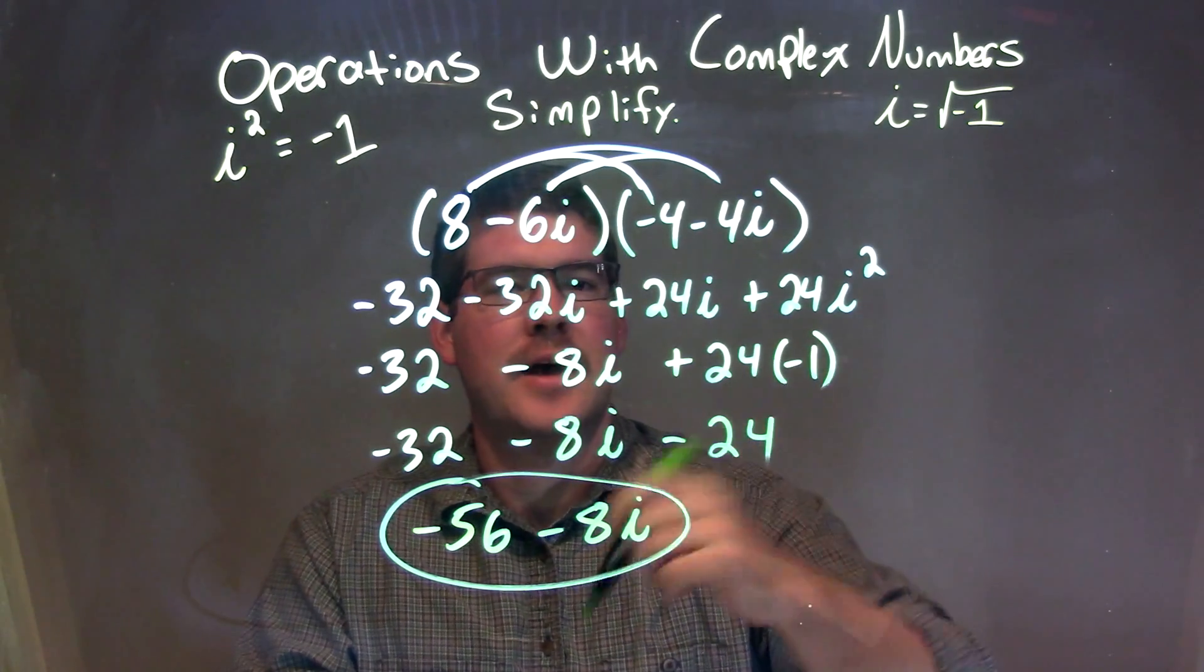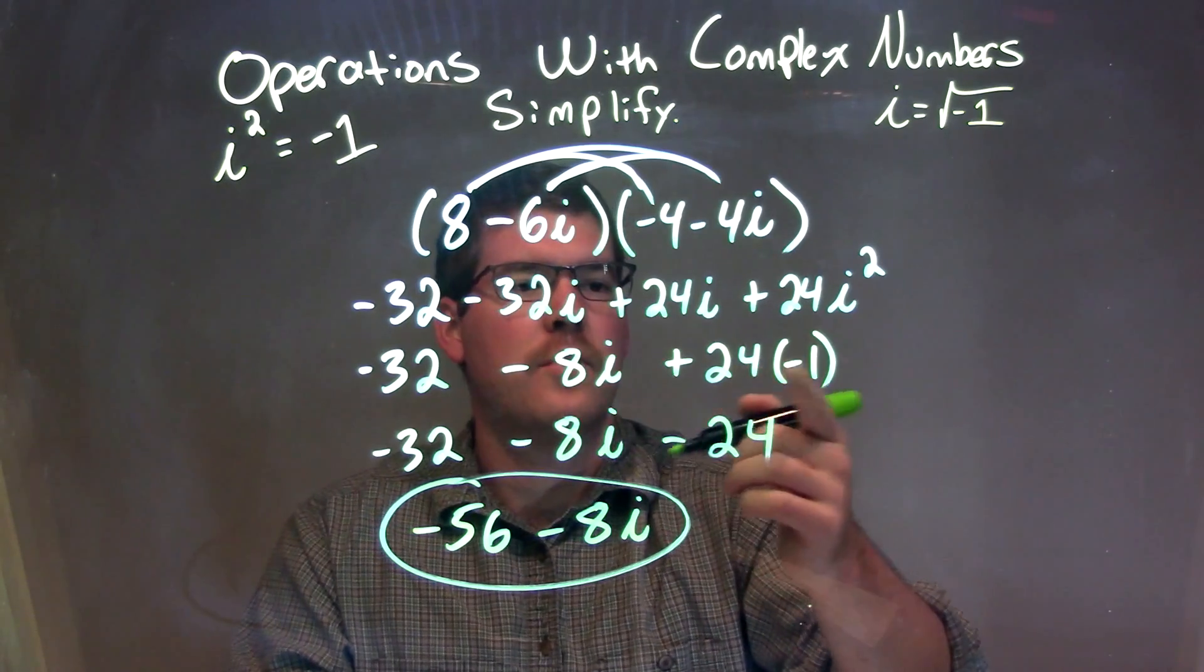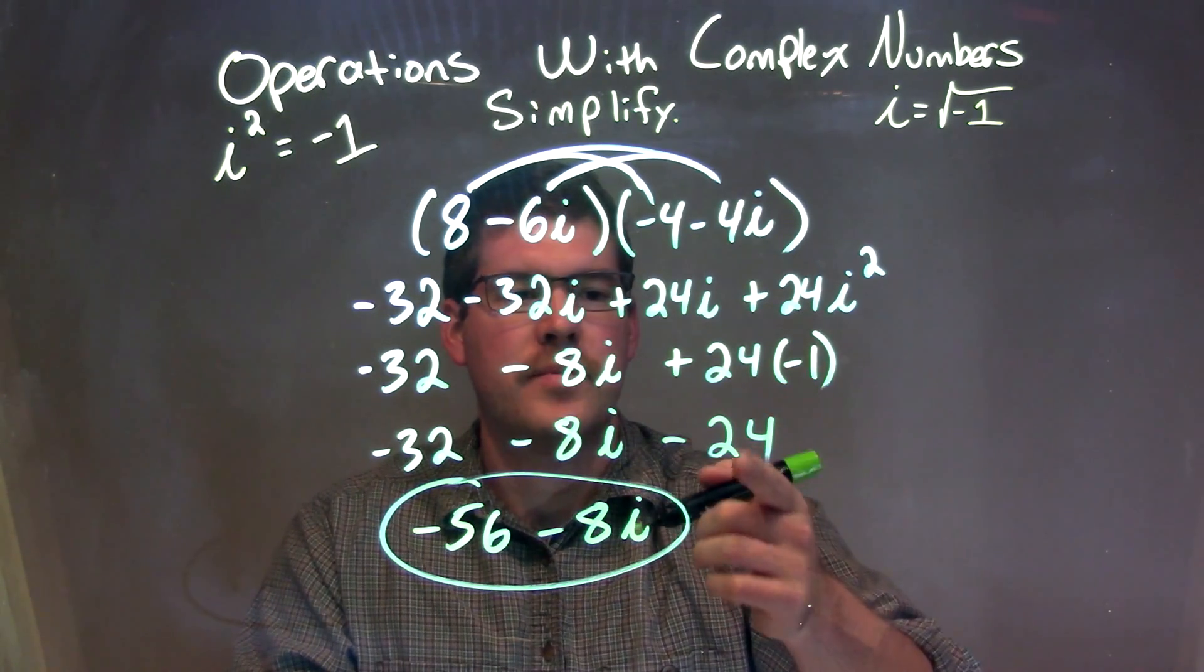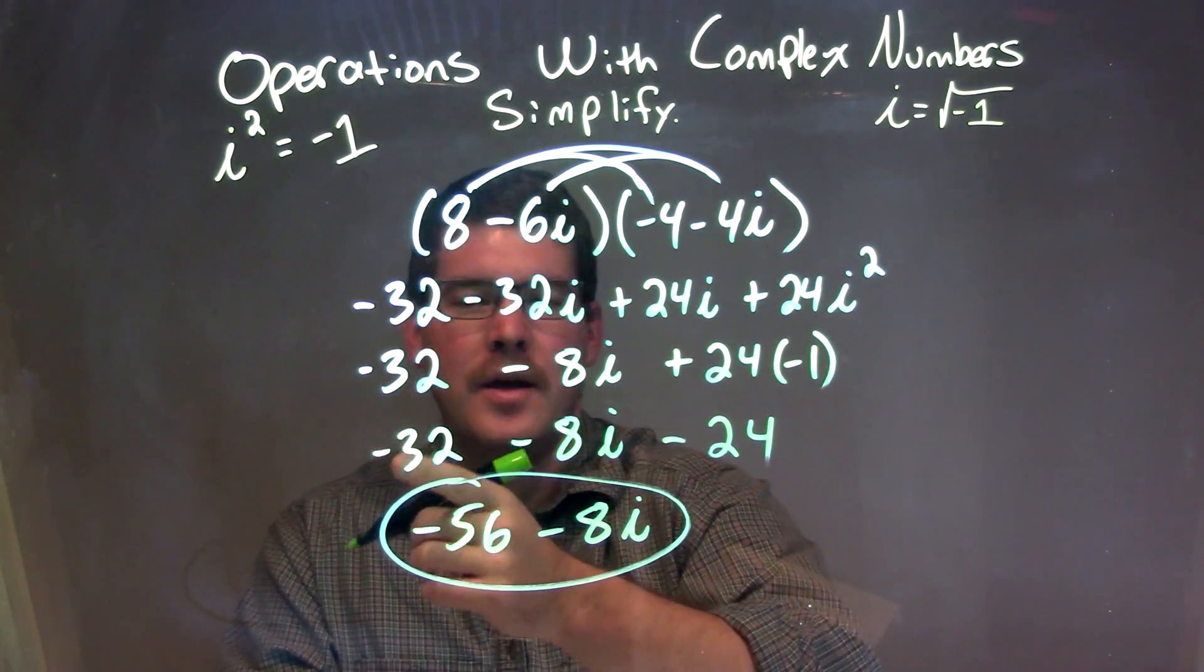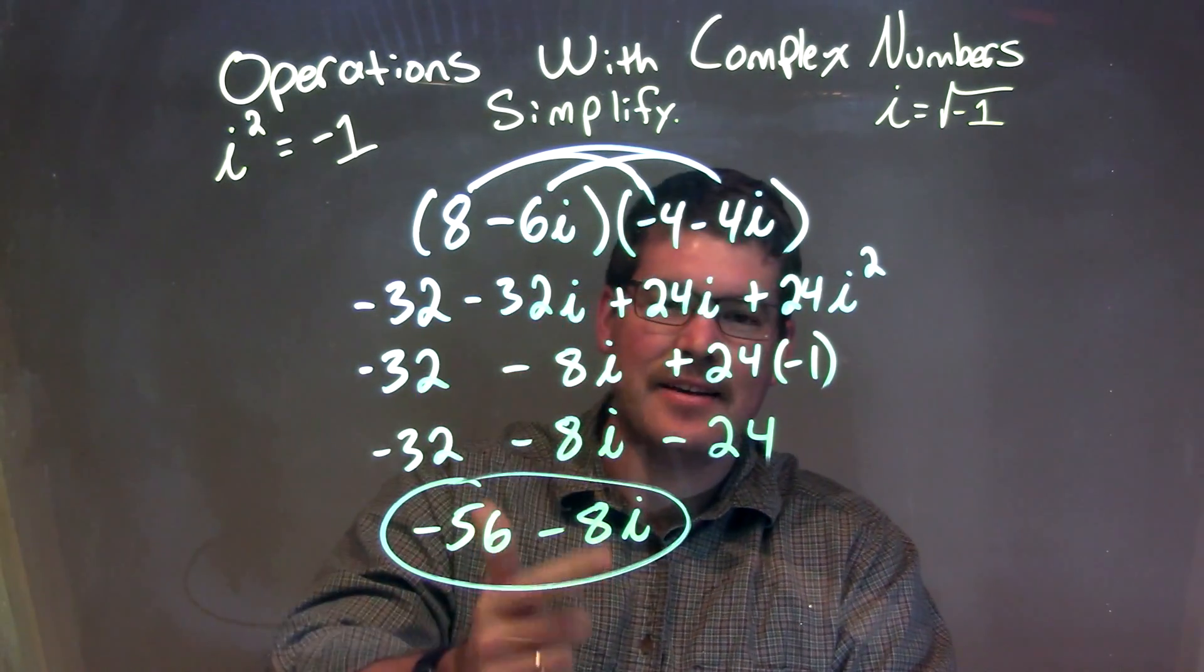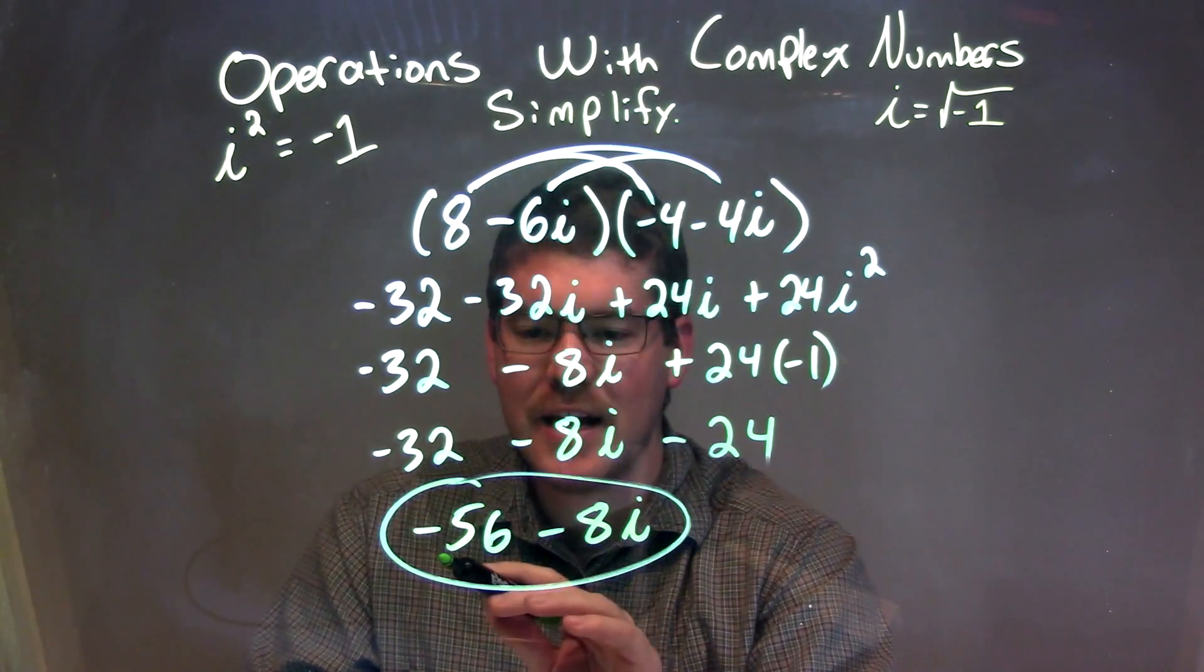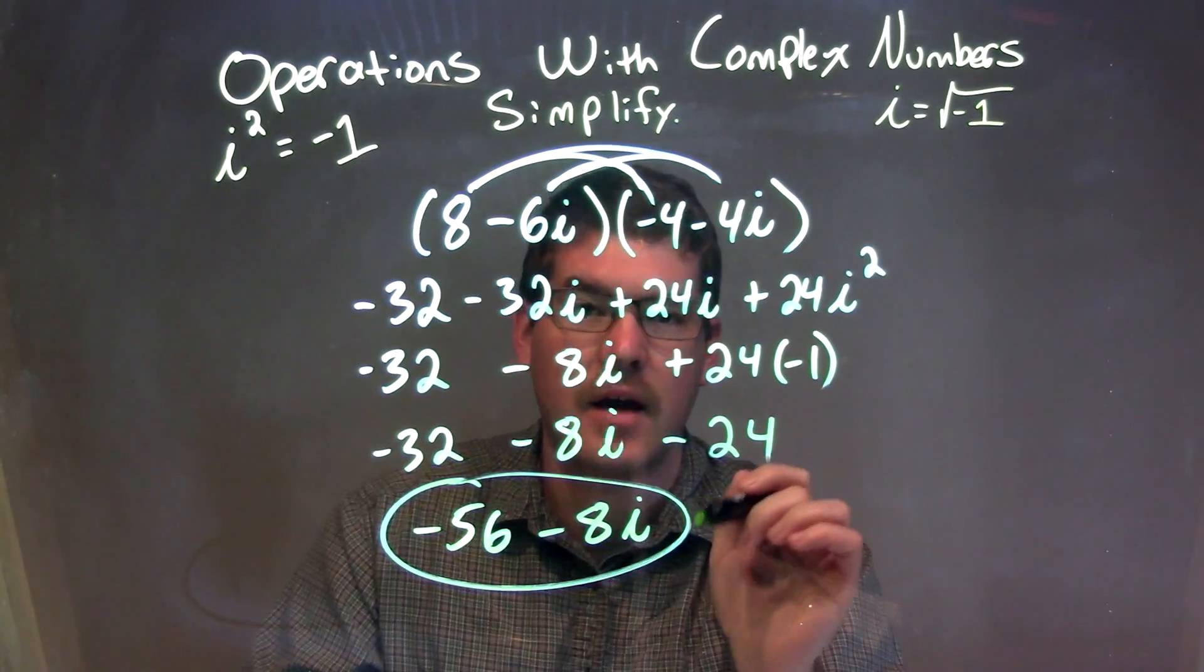i squared became negative 1, and negative 32i plus 24i became negative 8i. The 24 times negative 1 became negative 24, and negative 32 plus negative 24 is negative 56. We brought down the negative 8i, giving us our final answer of negative 56 minus 8i.